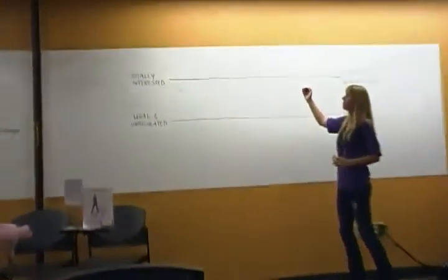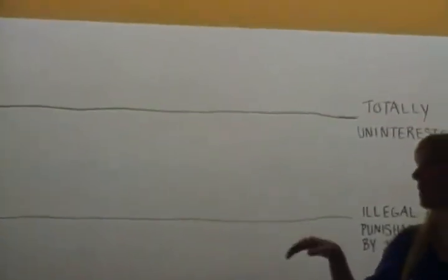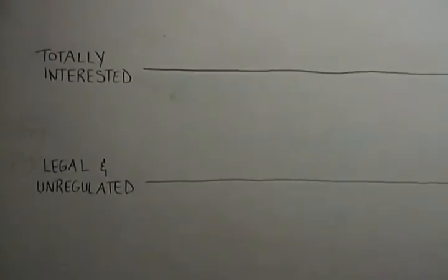So, I have two lines up here. One is a continuum from totally interested to totally uninterested. And the bottom line is from legal and unregulated to illegal and punishable by jail. I'm going to give each person maybe two or three different scenarios.